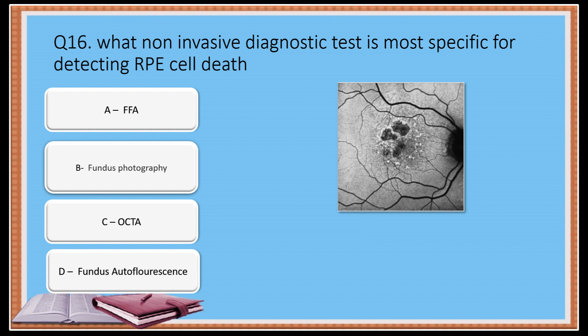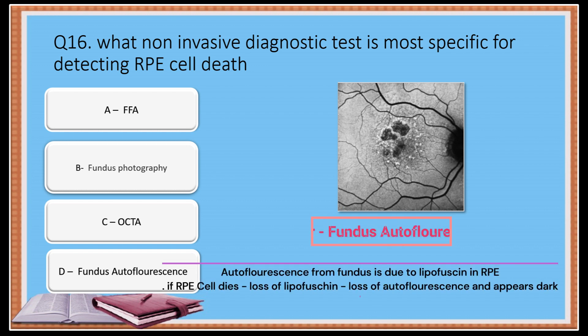Question 16: What non-invasive diagnostic test is most specific for detecting RPE cell death? Option A: FFA. Option B: Fundus photography. Option C: OCT angiography. Option D: Fundus autofluorescence. The correct answer is fundus autofluorescence. Autofluorescence from the fundus is due to lipofuscin in the RPE. If an RPE cell dies due to loss of lipofuscin, there is